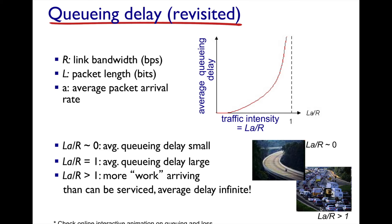Traffic intensity LA over R close to zero is like highways wide open. LA over R greater than one is like driving in major metro traffic at rush hour — you're not going anywhere. Traffic intensity is a plot you can actively monitor over time for each router to get a picture of end-to-end throughput across your network. Data centers care a lot about this. When talking about the real internet, traffic intensity is expressed from the perspective of a single router, but there's more than one router or hop from source to destination.